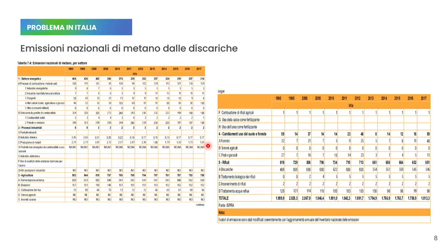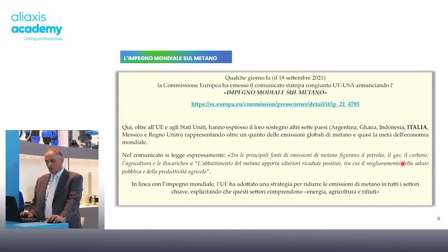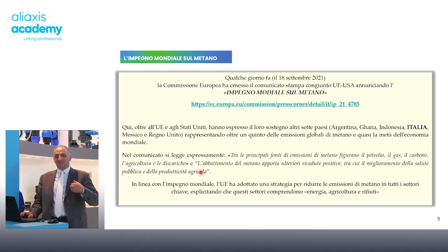Anche qui ci sono dati da pubblicazioni ISPRA ufficiali che evidenziano la pesantezza dell'emissione di metano da rifiuto in atmosfera. Una cosa interessante è l'accordo pubblicato il 18 settembre 2021 fra la comunità europea e l'America per l'abbattimento del metano disperso in atmosfera, soprattutto riguardo a petrolio, gas, carbone, agricoltura e discariche. Le discariche sono state citate come uno dei punti focali su cui concentrare l'attenzione per diminuire l'inquinamento ambientale.